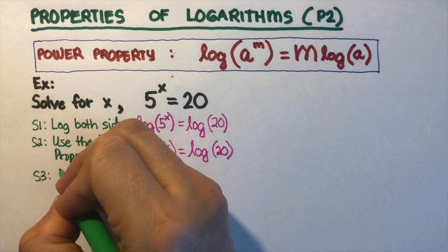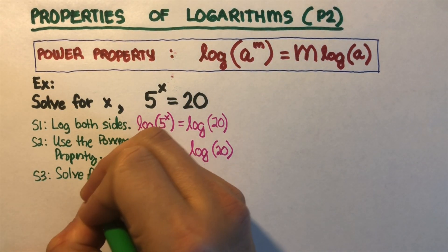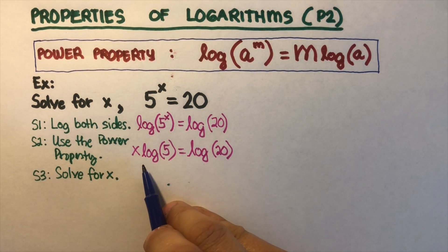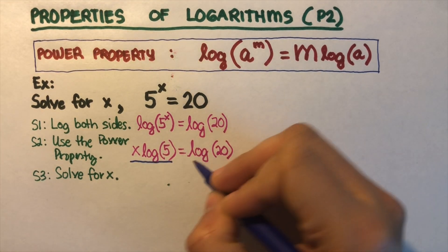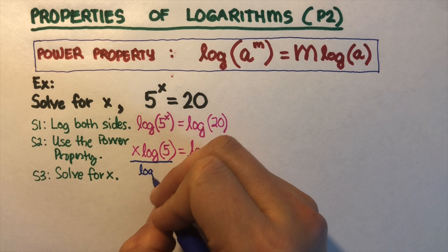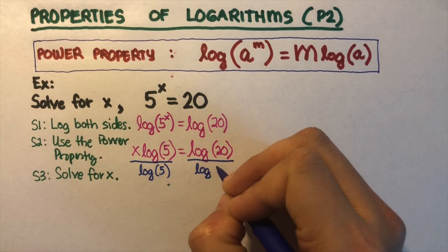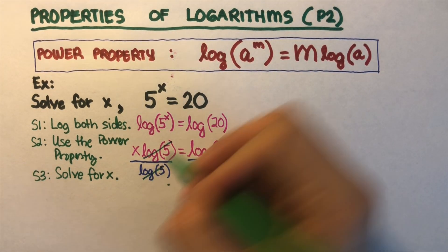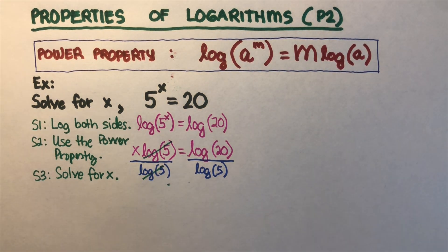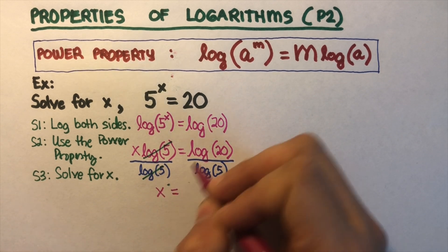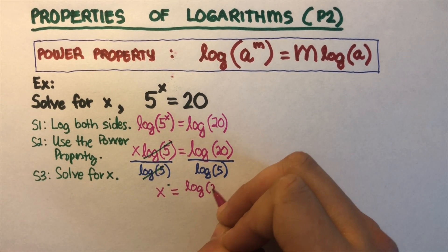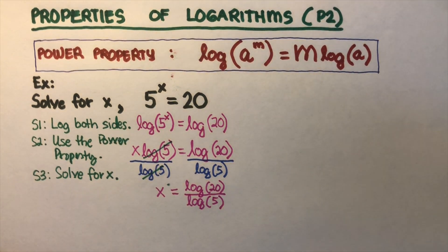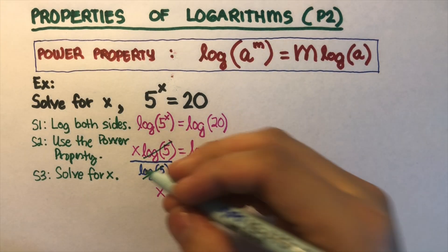Step 3 is to solve for x. To solve for x, we are supposed to divide both sides. We want x by itself. So we are going to divide both sides by log of 5. Divide by log of 5, and we can cross the log of 5. So our x is log of 20 over log of 5. This is our x.